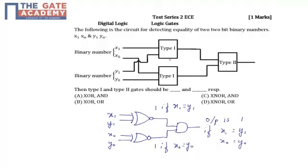That is x1 x0 and y1 y0. So we are given a diagram over here, and what we are supposed to find is: then the type 1 and type 2 gate should be blank and blank respectively. Option A is XOR and AND.